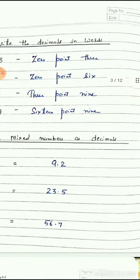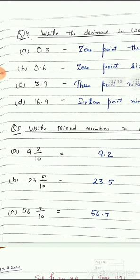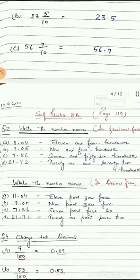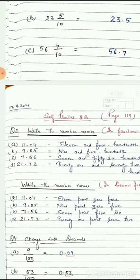Suppose you have a mixed number — just like question number 5: 9 and 2 upon 10. Here 9 is a whole number, so we will write it on the left side. The decimal part, 7 upon 10, means 0.7, written on the right side. In the middle there is a decimal point.